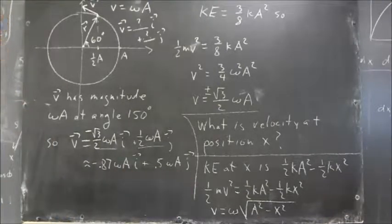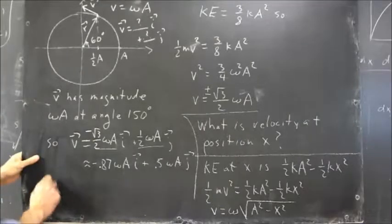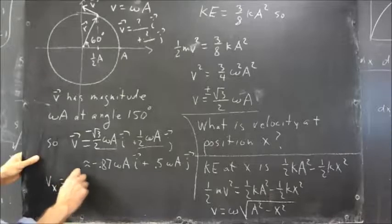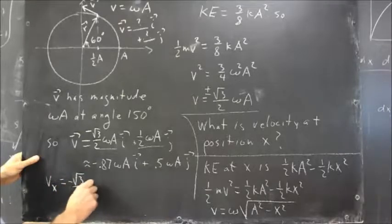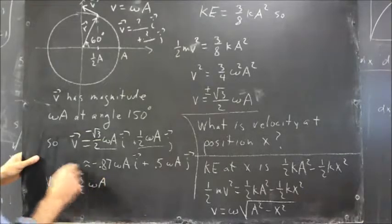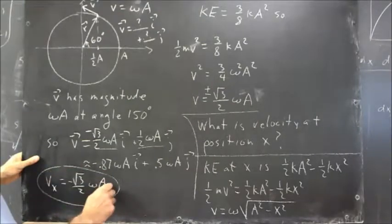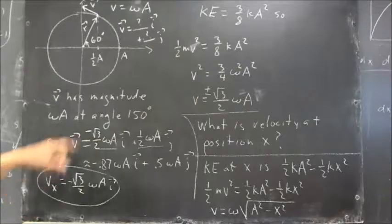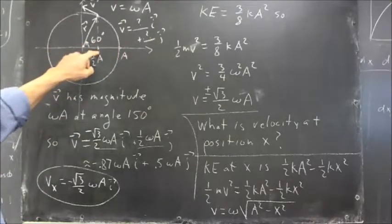And then, what we get is Vx equals negative square root of 3 over 2, omega A times the I vector. And that's the velocity of the oscillator at this point.